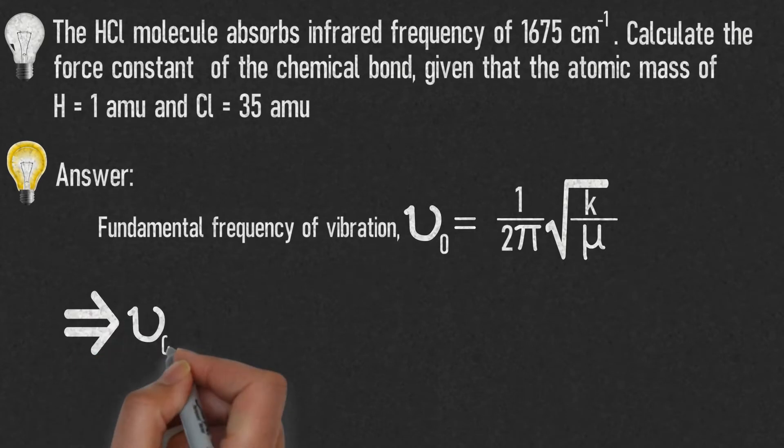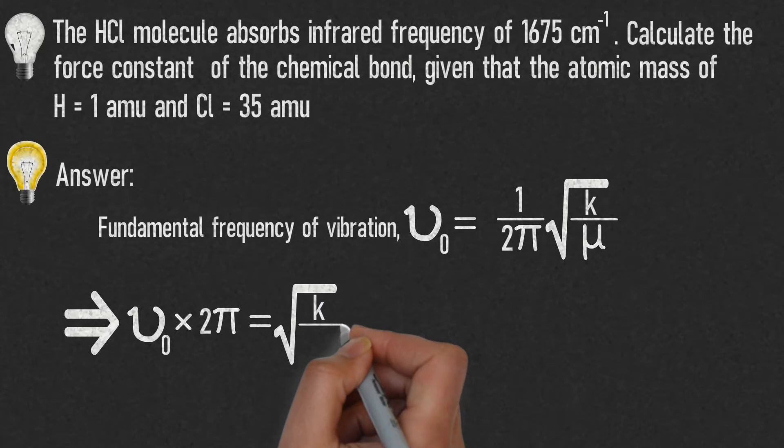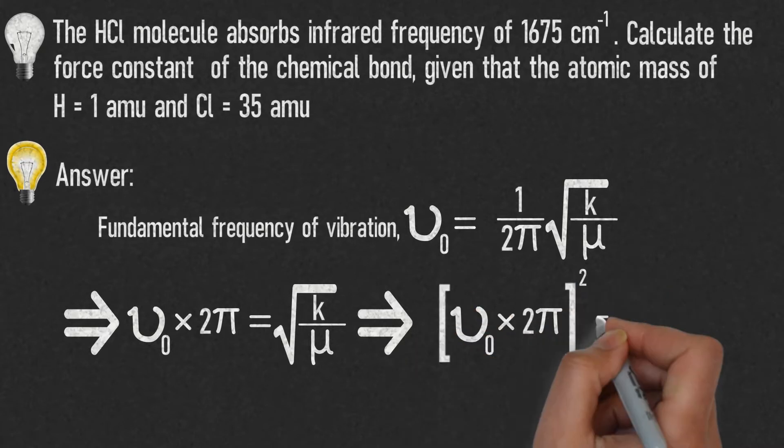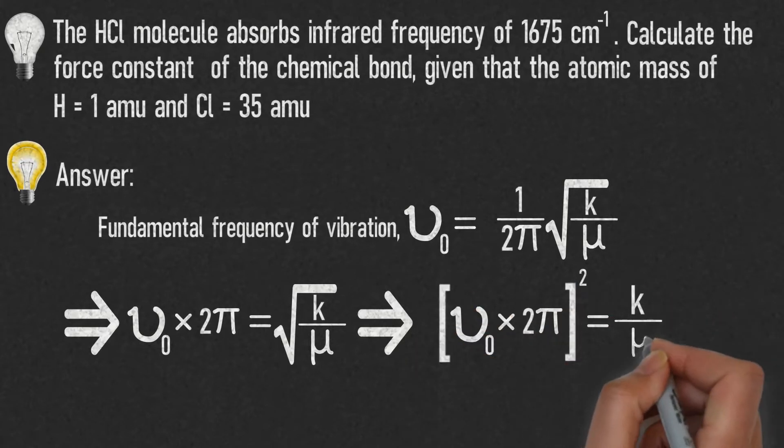Which implies ν₀ × 2π = √(k/μ). Squaring on both sides, we get (ν₀ × 2π)² = k/μ.